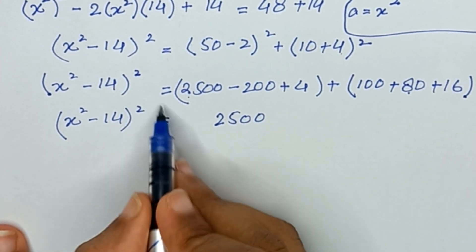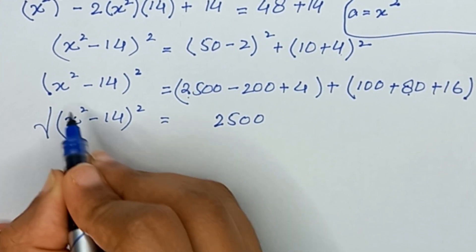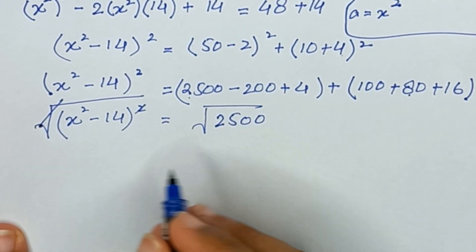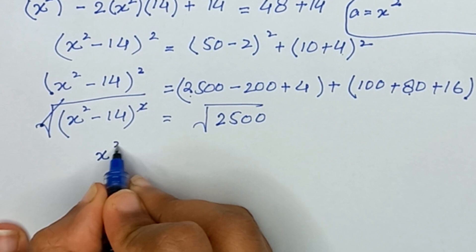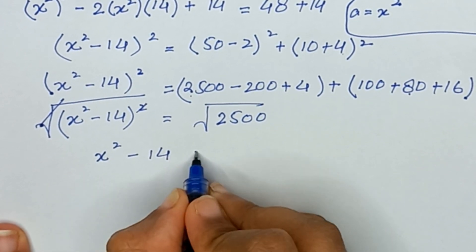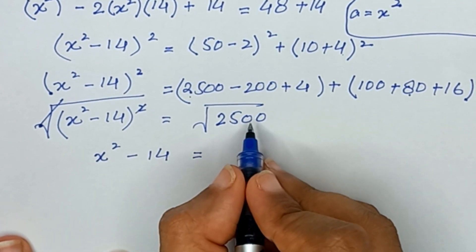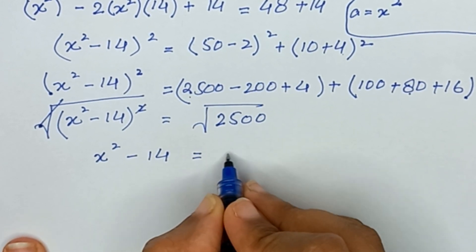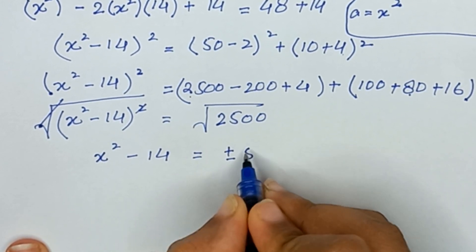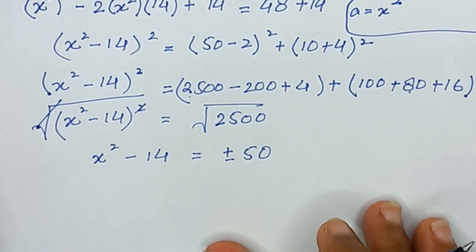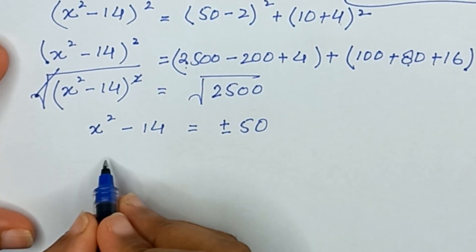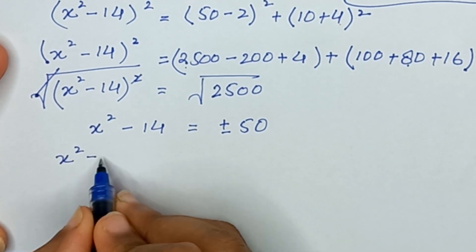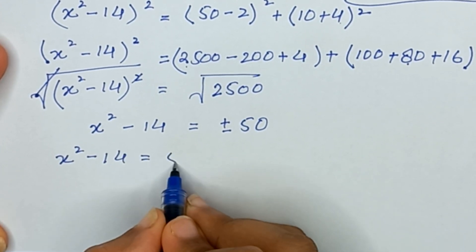We remove the square by applying square root to both sides. The square and square root cancel, giving x squared minus 14 equals plus or minus square root of 2500, which is plus or minus 50. So we have two solutions: x squared minus 14 equals plus 50, and x squared minus 14 equals minus 50.